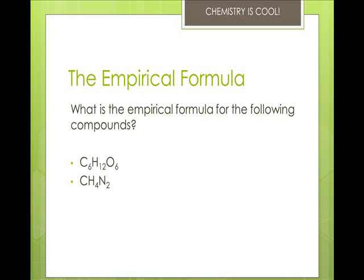The empirical formula is what happens when we determine the formula by the percentage of its components. The empirical formula is the lowest whole number ratio of the elements in a compound, and the molecular formula is the actual ratio of elements in a compound. Sometimes they can be the same, sometimes they can be different.